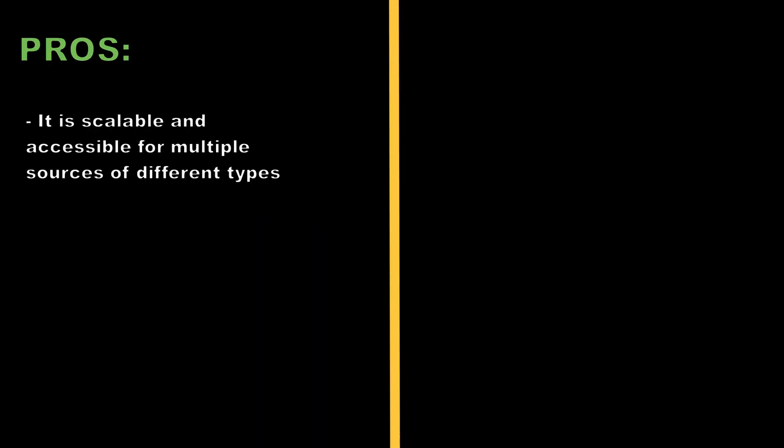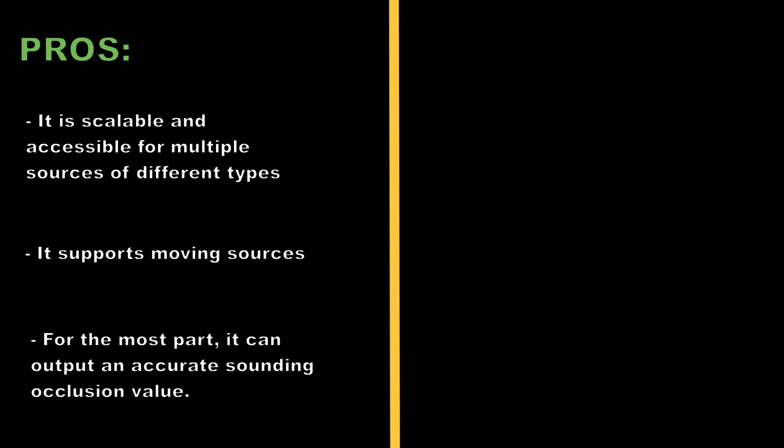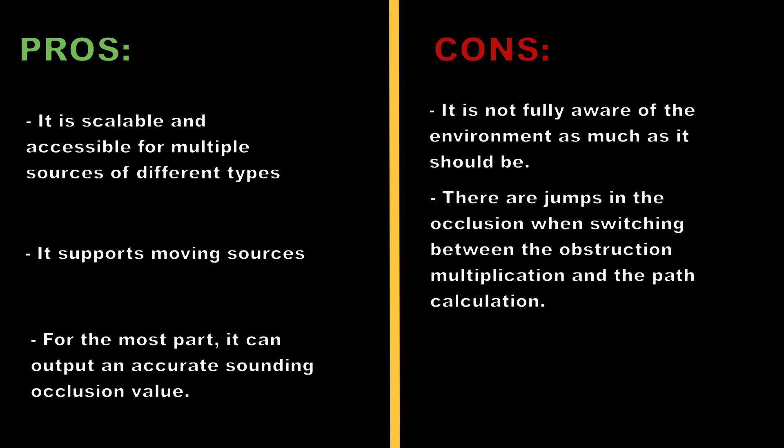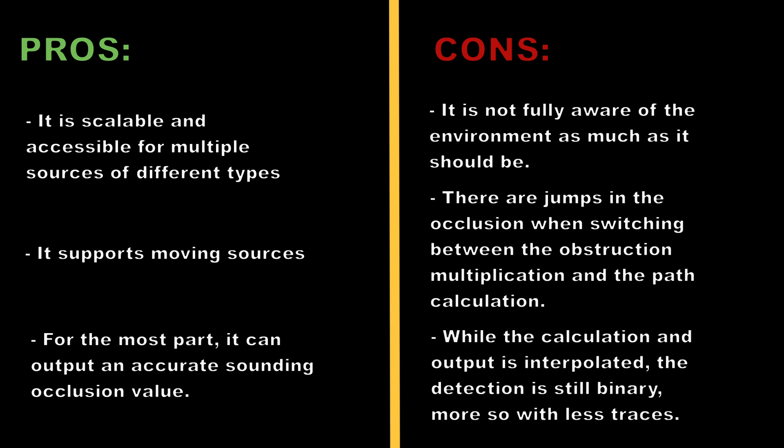In total, there are a few things this system does well and a few things it lacks. For the pros: it is scalable and accessible for multiple sources of different types; it supports moving sources; and for the most part, it can output an accurate sounding occlusion value. For the cons: it is not fully aware of the environment as much as it should be; there are jumps in the occlusion when switching between the obstruction multiplication and the path calculation; and while the calculation and output is interpolated, the detection is still binary, more so with fewer traces.